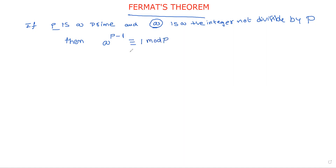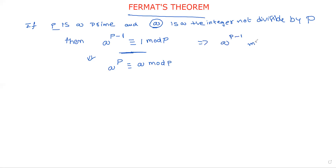What do we mean by congruent? a^(p-1) mod p is equal to 1. This can also be written as a^p ≡ a (mod p). That is, a^(p-1) mod p equals 1, and a^p mod p equals a. This is called Fermat's theorem.